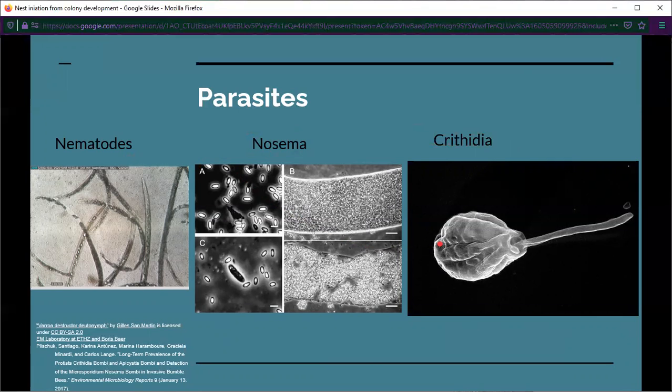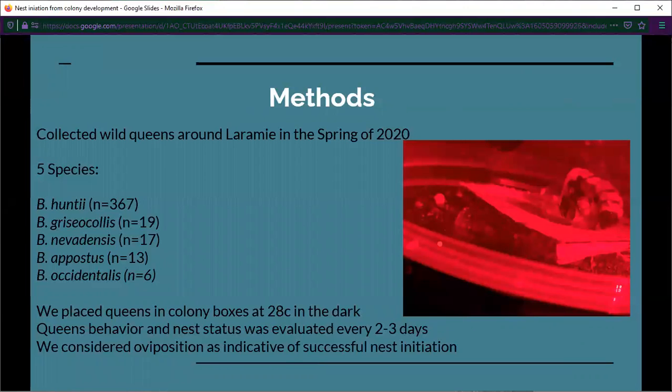We collected wild queens around Laramie this past spring. We collected five species: Bombus huntii, Bombus griseocollis, Bombus nevadensis, Bombus appositus, and Bombus occidentalis. We placed the queens in temperature and humidity controlled colony boxes in the dark. Then we evaluated their behavior and nest status about every two to three days when we fed them. We considered oviposition as indicative of successful nest initiation.